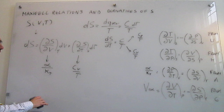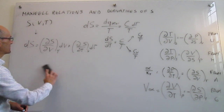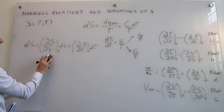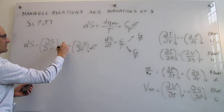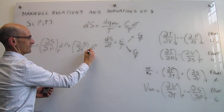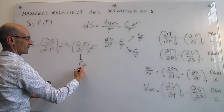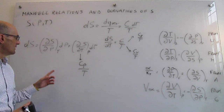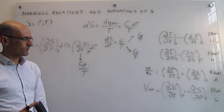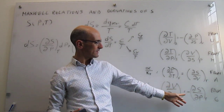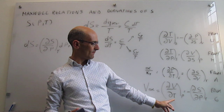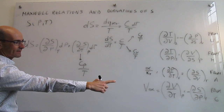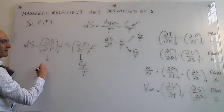Now let's do something analogous but with pressure, replacing volume with pressure throughout. At constant pressure, dS/dT becomes Cp/T — a slight change from the constant-volume case. For the other partial derivative, Maxwell relations tell us that dS/dP at constant temperature equals −Vα. So there is a negative sign there.